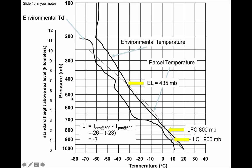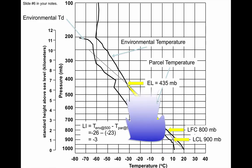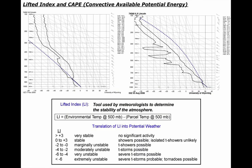Area on these thermodynamic diagrams represents energy. The colored area in this diagram is called CAPE — Convective Available Potential Energy. The more CAPE you have, the bigger and more powerful the thunderstorm is. In this diagram, cloud base is here at the LCL. At the level of free convection, it becomes unstable and begins to bubble up. The equilibrium level at the top is where the anvil cloud forms.